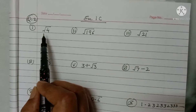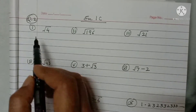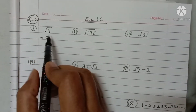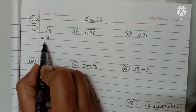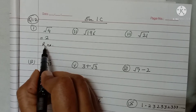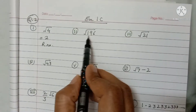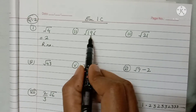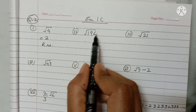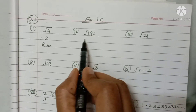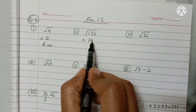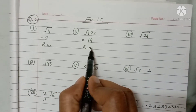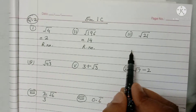First, √4: since 4 is a perfect square, this becomes 2, so this is a rational number. Next, √196: since 196 is a perfect square number, this becomes 14 (because 14 × 14 = 196), so this is also a rational number.